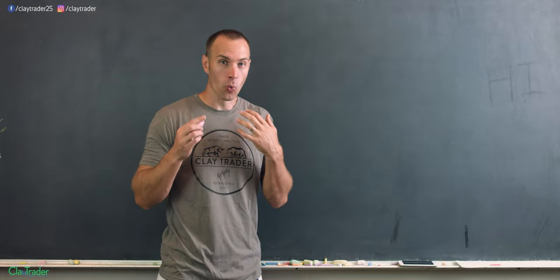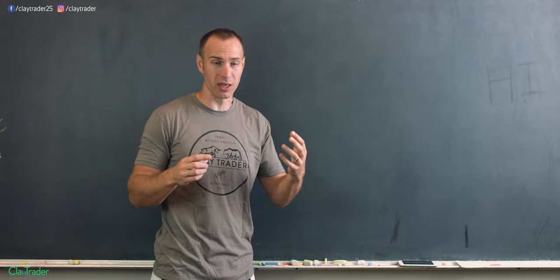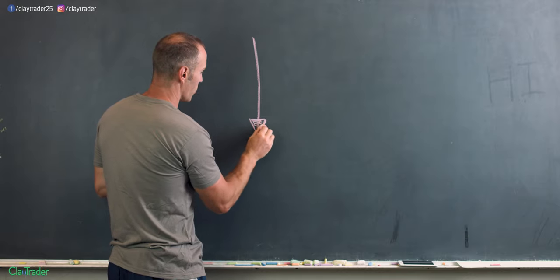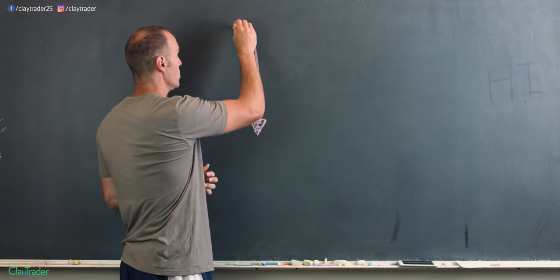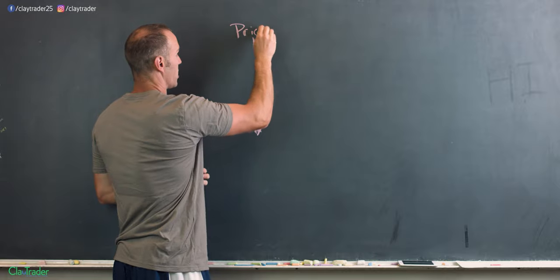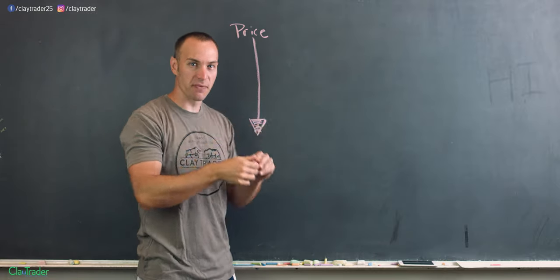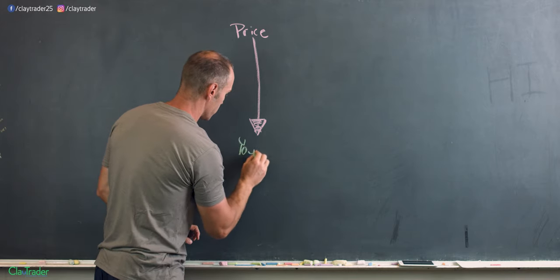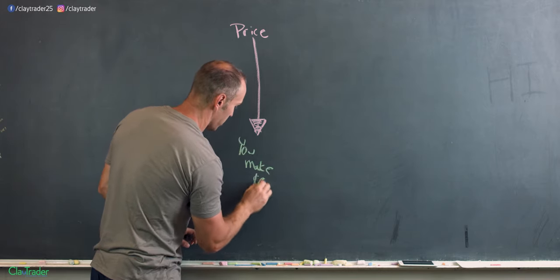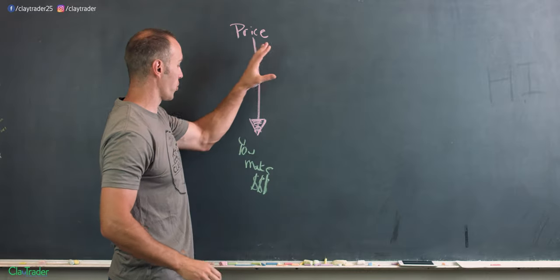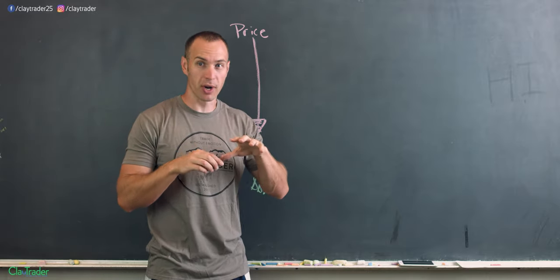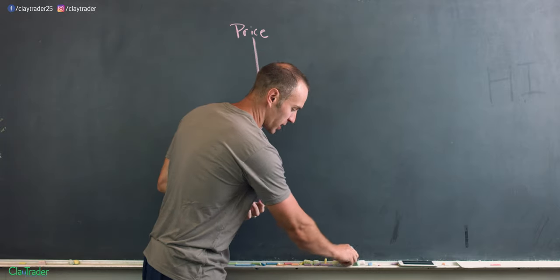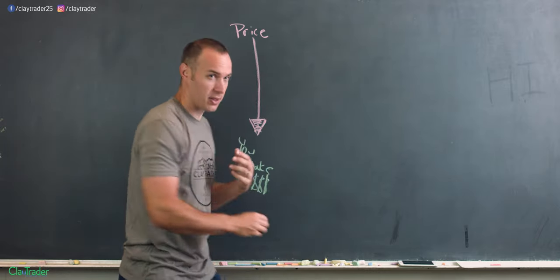So at the forefront, the first thing you need to understand about short selling is this: it's all about prices going down. When prices go down, so this could be a price, it could be a value, but prices, value go down, that means that you make money. I realize that sounds kind of bizarre, but yeah, in the world of short selling you want values, you want prices to drop, to go down.